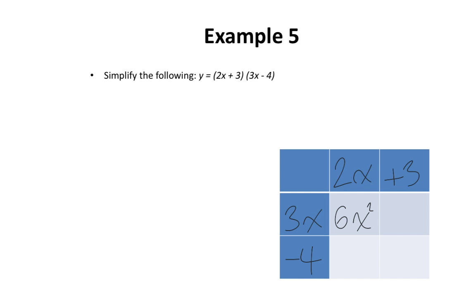Next, 3x multiplied by positive 3: 3 times 3 is positive 9, and the x tags along — positive 9x. Then negative 4 multiplied by 2x: negative 4 times positive 2 is negative 8, and the x tags along — negative 8x. Last, negative 4 multiplied by positive 3 is negative 12.